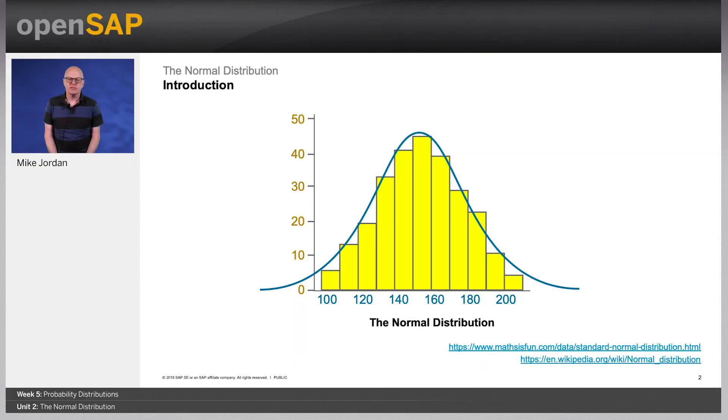Hello and welcome back to Week 5, Unit 2 of the OpenSAP course, Introduction to Statistics for Data Science. In this unit, we'll look at the normal distribution in more detail. In many cases, data tends to a central value with no bias left or right. This is called a normal distribution.